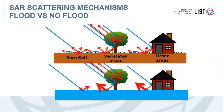When we map flood, we have to consider three different land cover classes where the SAR signal behaves differently depending on whether flood water is occurring or not. On bare soil, we expect a decrease of the backscattering with respect to a dry situation. In a vegetated area, we expect an increase of backscattering if the canopy is not too dense to impede signal penetration. In urban areas, we also expect an increase of backscattering looking at the intensity.